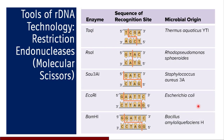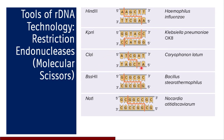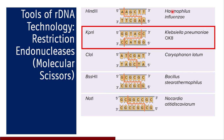Looking at the table of restriction enzymes with their recognition sequences and microbial origins: TAC1, RSA1, SA3A1, EcoRI, BamHI — their sequences and cut patterns are shown. RSA1 cuts to produce blunt ends. TAC1, SA3A1, EcoRI, and BamHI cut the DNA with 5' sticky ends due to 5' overhangs. HIN3, CLA1, BSH2, and NOT1 also cleave with 5' overhangs. The exception is KPN1, which cuts the DNA molecule with 3' overhangs — an important distinction that may be asked in MCQs.